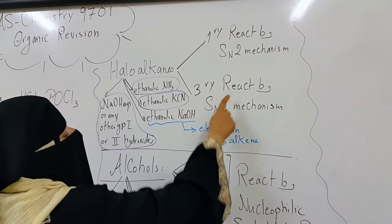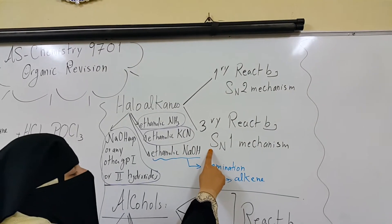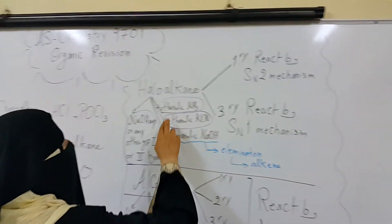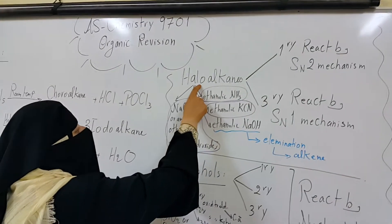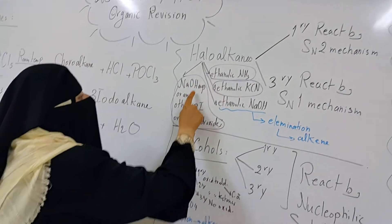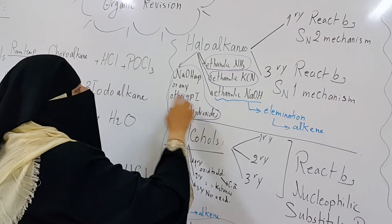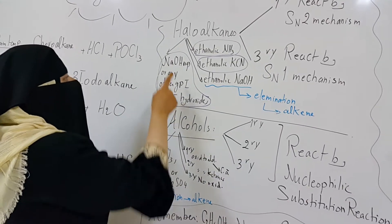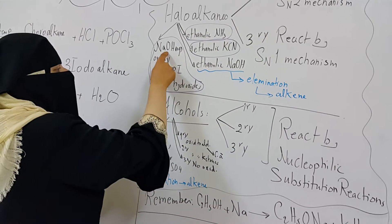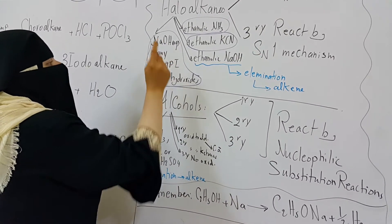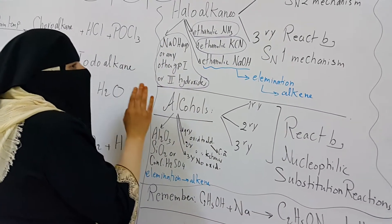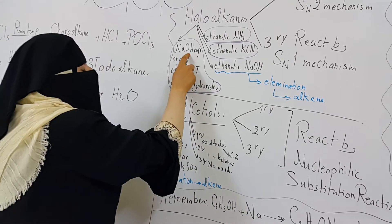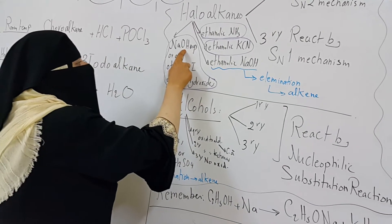Tertiary halo-alkanes react by nucleophilic substitution reaction of the first order (SN1). Halo-alkanes can react by nucleophilic substitution with aqueous sodium hydroxide — in fact, any group 1 or group 2 hydroxide in aqueous medium can perform this reaction.